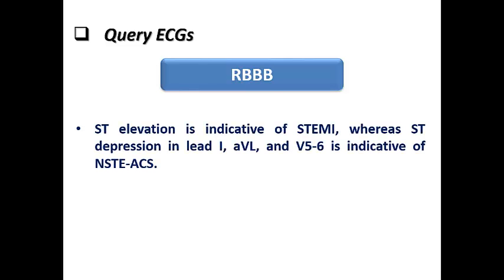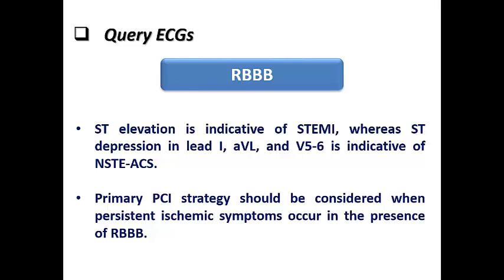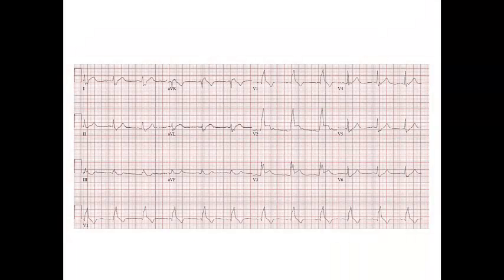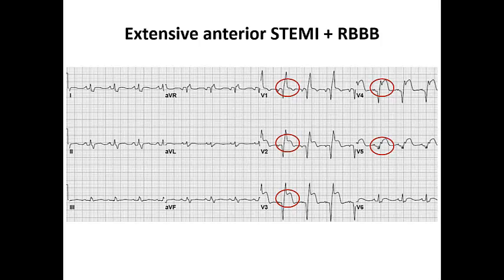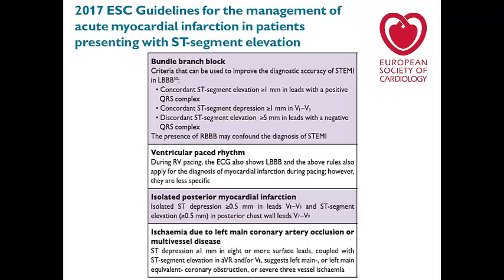Regarding right bundle branch block: ST elevation in RBBB is suggestive of STEMI, and ST depression in leads I, aVL, V5, and V6 indicates non-ST elevation acute coronary syndrome. Primary PCI should be considered if the patient has persistent ischemic symptoms with RBBB. Here, a patient with RBBB has ST elevation in V2–V3, consistent with anteroseptal STEMI plus RBBB. Another example shows ST elevation from V1 to V5 with RBBB, suggestive of extensive anterior STEMI — the culprit likely being the proximal LAD before the first septal perforator, which caused the acute RBBB. The 2017 ACC/AHA STEMI guidelines include Sgarbossa criteria for RBBB and note that the same rules apply to ventricular paced rhythm.